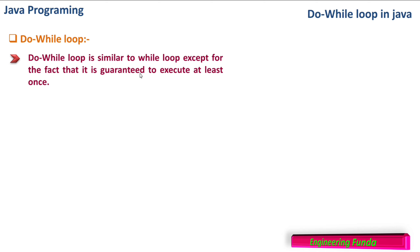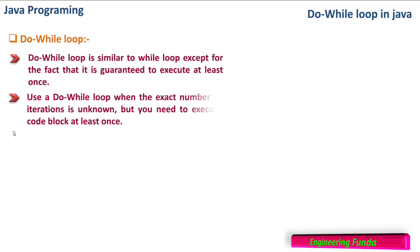The do-while loop is similar to the while loop, except for the fact that it is guaranteed to execute at least once. The while loop is an entry controlled loop, while the do-while loop is an exit control loop. It is guaranteed that it will execute the code inside the loop at least once, and then it will check the condition and decide whether to continue or exit the loop.